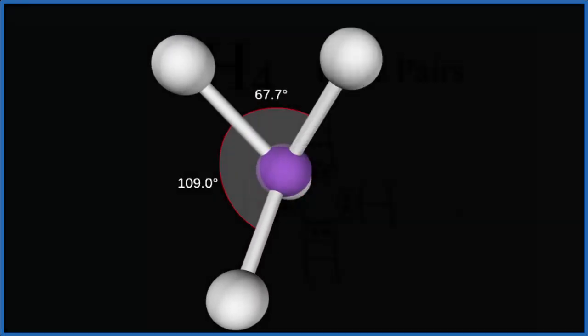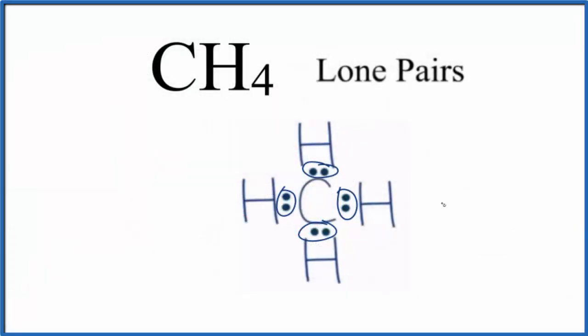Back to our Lewis structure. To recap, for CH4, based on the Lewis structure, all of the pairs of electrons are involved in chemical bonds. These are all bonding pairs. So CH4, methane, has zero lone pairs.